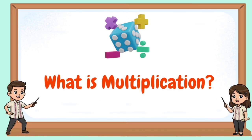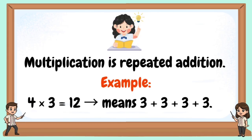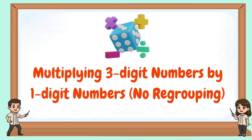What is multiplication? Multiplication is repeated addition. For example, 4 times 3 equals 12. That means 3 plus 3 plus 3 plus 3.